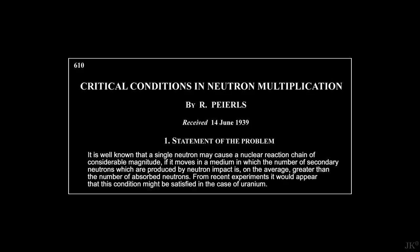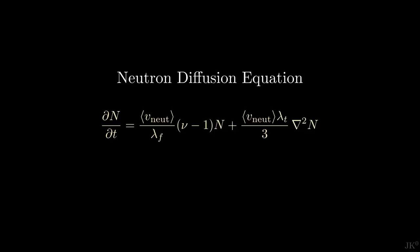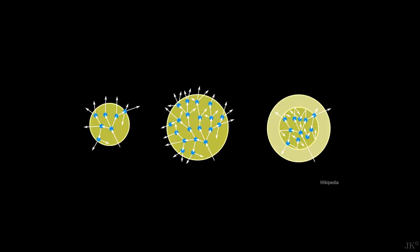Peierls described the distribution of neutrons produced inside a material undergoing nuclear fission using the neutron diffusion equation. This is a complicated differential equation whose solution would require its own video. Let me know in the comments if you nuclear nerds would like to see that. It is a really fun exercise, but it requires some calculus.